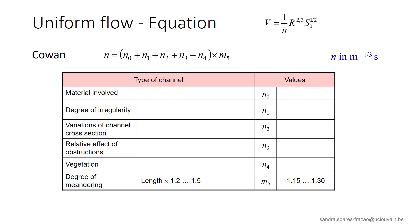Finally, the degree of meandering of the considered channel can also increase the apparent friction coefficient. The presence of meanders will induce several changes in the flow direction, that are sources of head losses. This is accounted for by the multiplication factor m5.